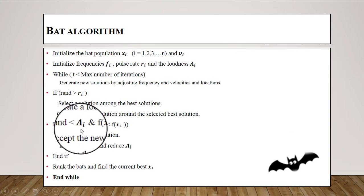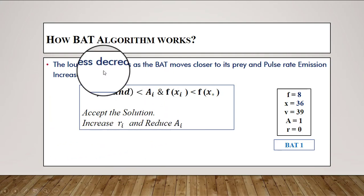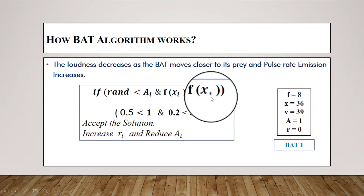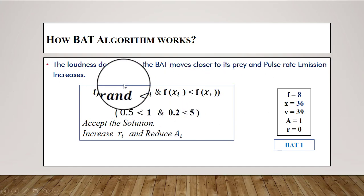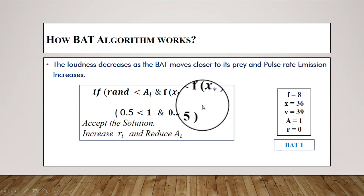We then check: if a random value is less than ai (the loudness), we accept the new solution, increase the pulse rate, and reduce the loudness. Note that as the bat moves closer to its prey, loudness decreases and pulse rate increases. The values of f(xi) and f(x_star) can be calculated using a formula linked in the description. For the first bat, f(xi) = 0.2, the random value is 0.5, and loudness is 1.